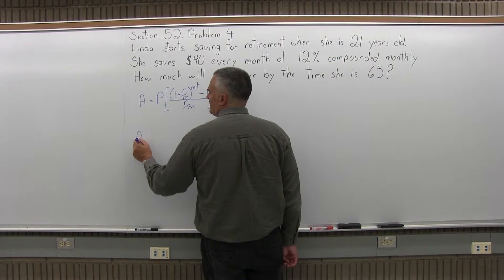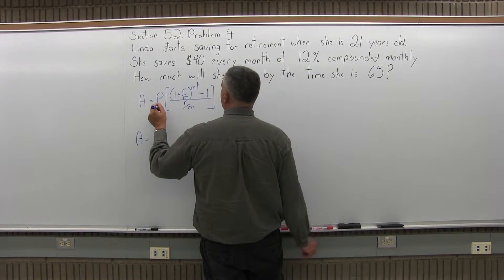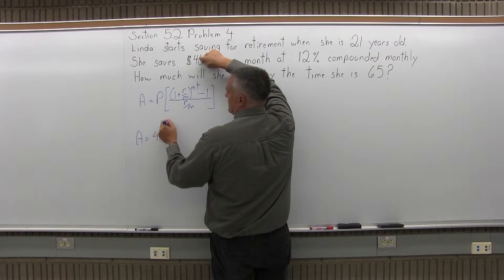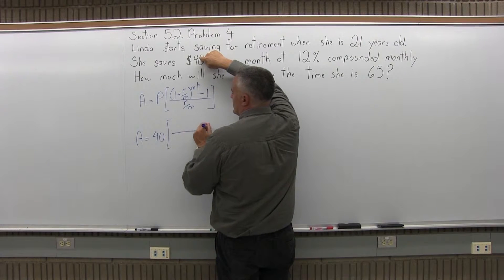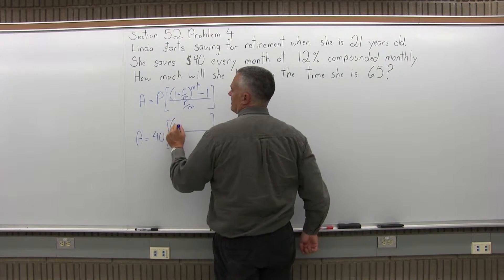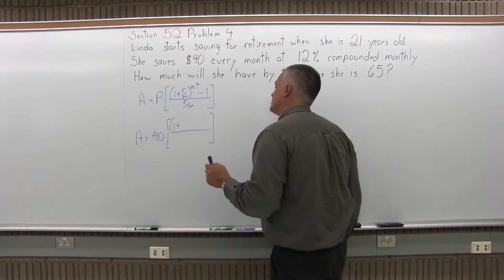Now, as we fill that in, A equals the P is the regular savings, which for this is $40. Then the brackets have a numerator and a denominator. In the numerator we have in parentheses 1 plus R over M. So the 1, of course, is just 1.